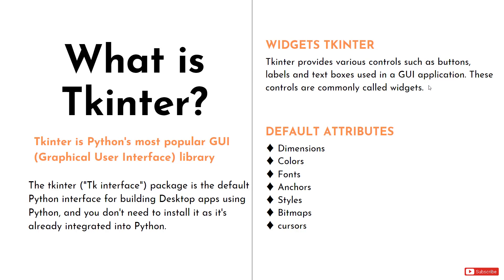We also have some default attributes. In order to build Tkinter you must know some creative stuff while designing and building, and those are things like dimensions, colors, fonts, anchors, styles, bitmaps, and cursors. If you don't know these, we will go through them while building with Tkinter. So this is a brief introduction about Tkinter.